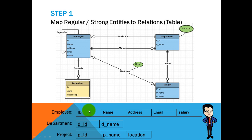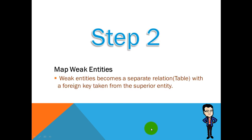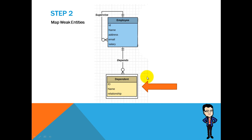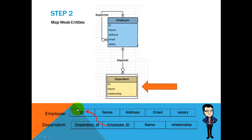Step two: mapping weak entity types. For each weak entity type, create a table. The primary key of this table is a combination of the identifier of the parent entity and the identifier of the weak entity. Here we create a separate table for 'dependent', and the primary key includes the identifier of the parent — that means employee ID — and the identifier of the dependent table.